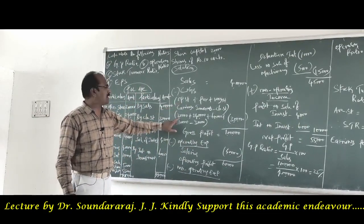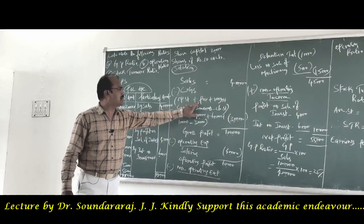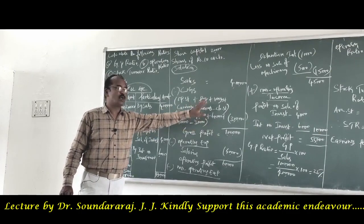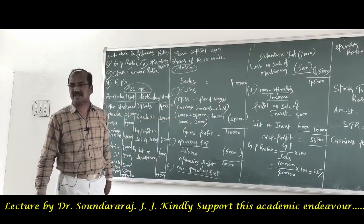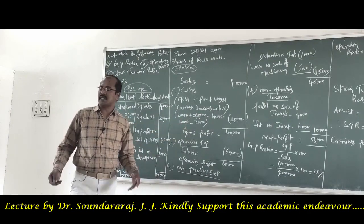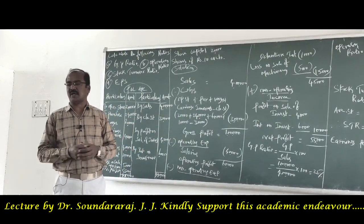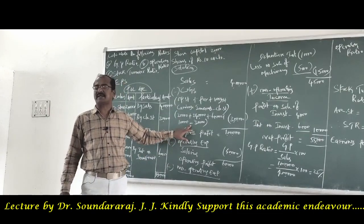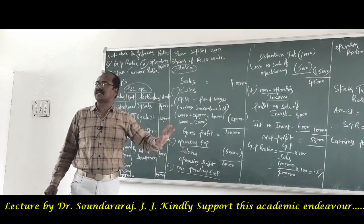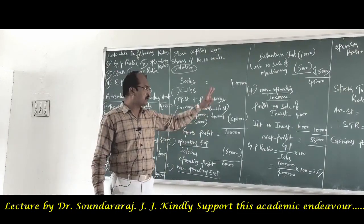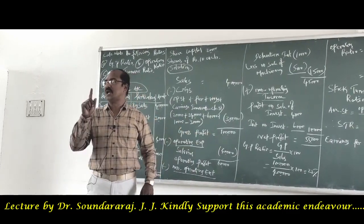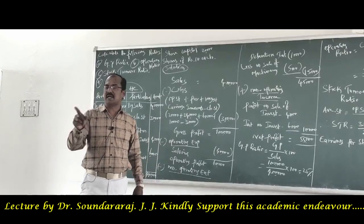Opening stock is given as 20,000. Purchases are 2 lakh 40,000. Wages are 60,000. Carriage inwards is 10,000 rupees. There are no direct expenses given in the problem, so we directly deduct closing stock of 30,000. The resultant figure comes to 3 lakh rupees as the cost of goods sold.